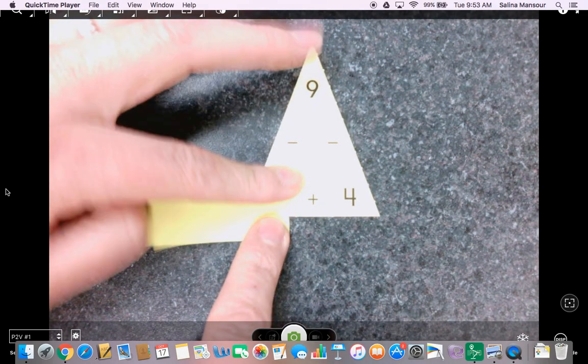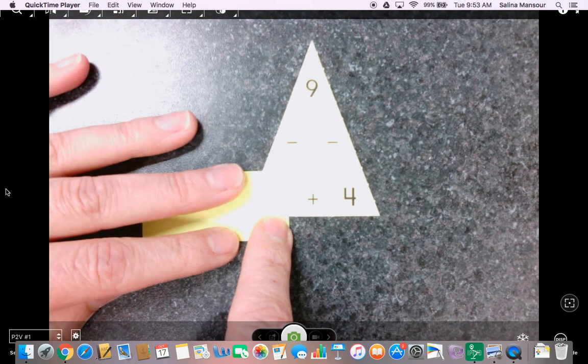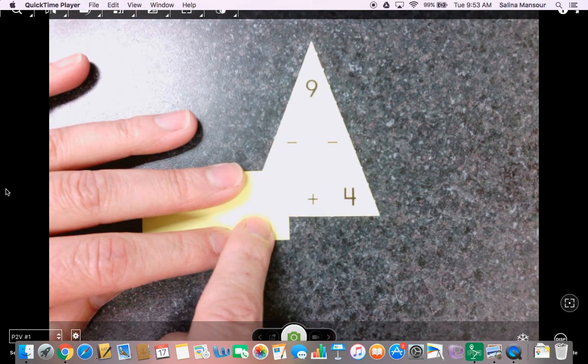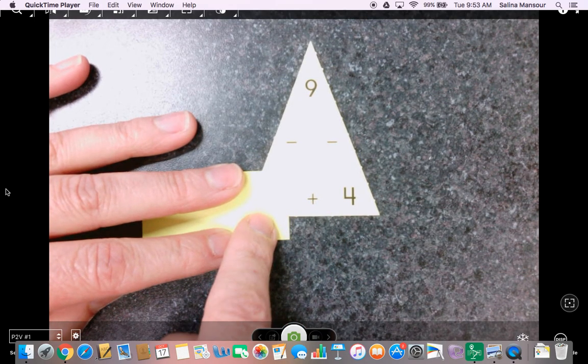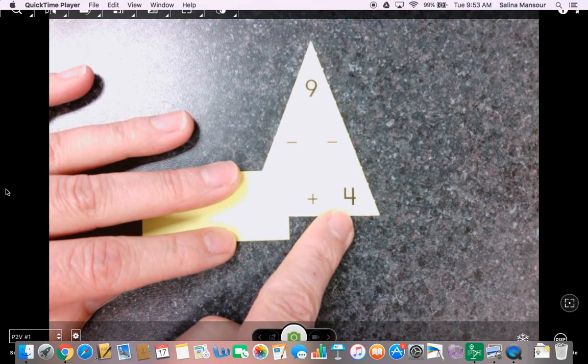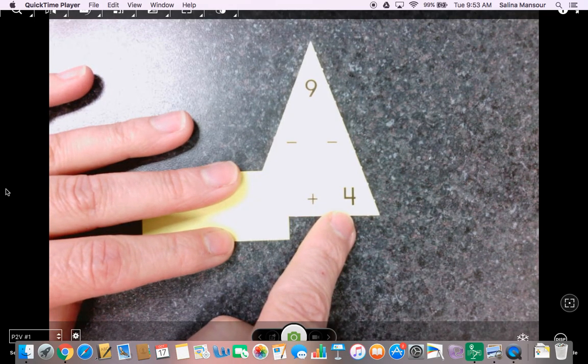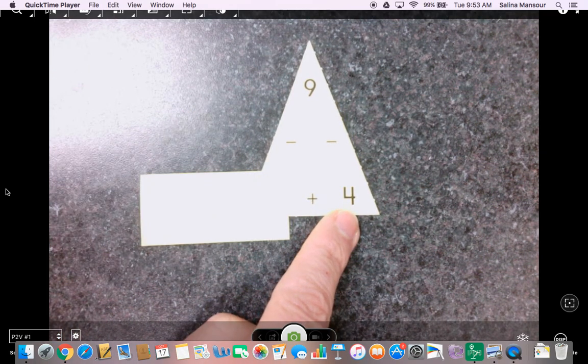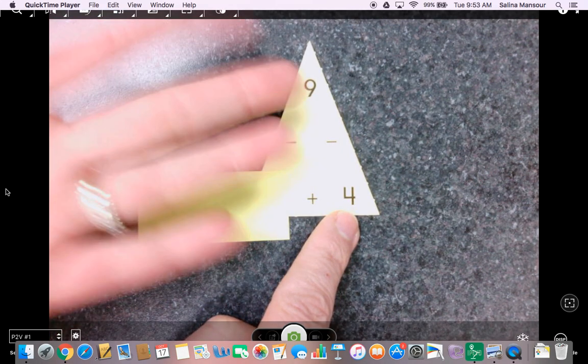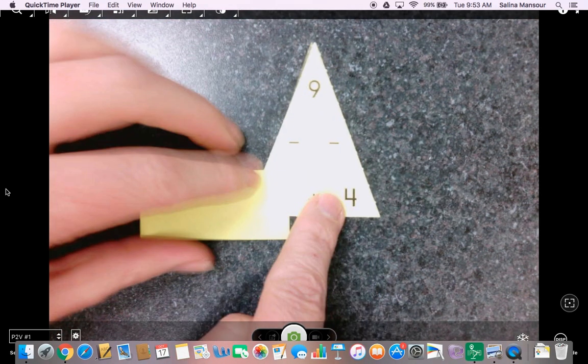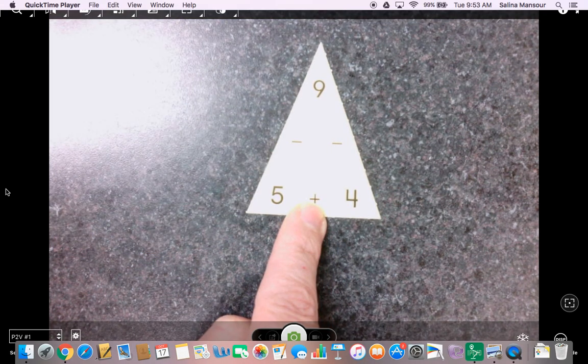Another strategy that the children are using is they're using to count up as well to figure out what the missing add-end is. So they also might look at it as, I'm going to think 4 plus what number gives me 9? And then they might count up 4, 5, 6, 7, 8, 9 using their fingers. They have 5 fingers, so they know that 4 plus 5 equals 9.